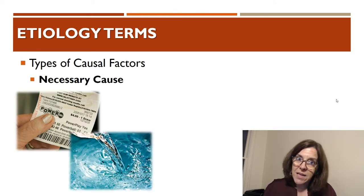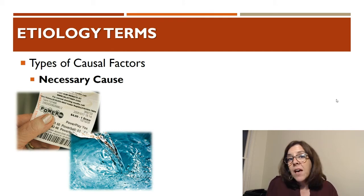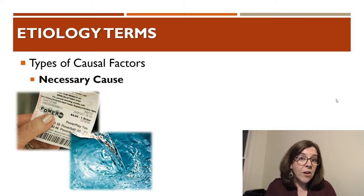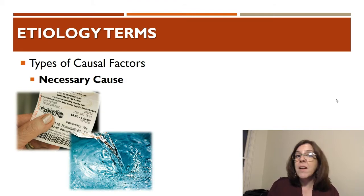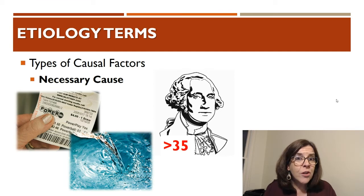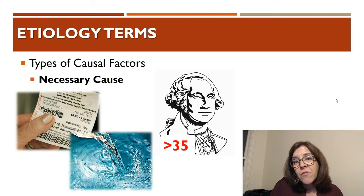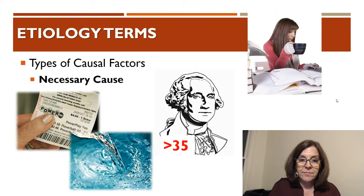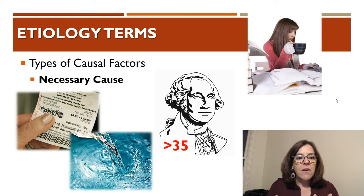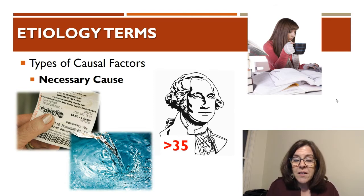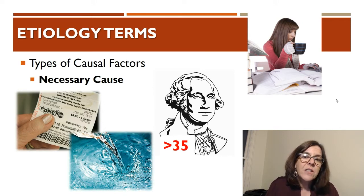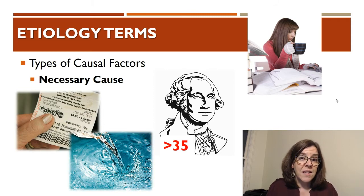Water is a necessary aspect of living — we have to have water to survive, but we have to have other things too, so water is necessary but may not be the only thing we need. Do you want to be president? You have to be at least 35 years old — being 35 is necessary to run for president. And if you want to do well on an exam, you need to be awake. Being awake is a necessary cause, but it may not be the only thing you need to be successful.